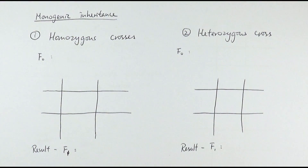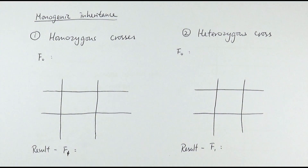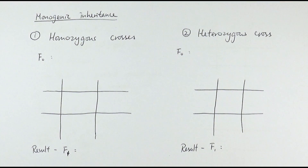In this video, we'll be looking at patterns of inheritance, specifically different types of monohybrid inheritance — different types of crosses. There will be five types of crosses for monogenic inheritance that I'm going to talk about here.